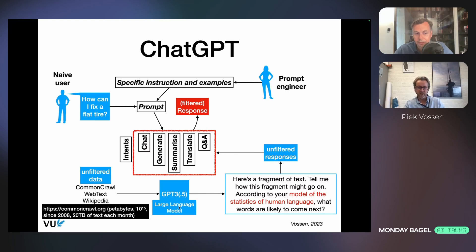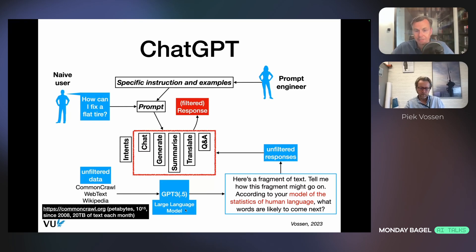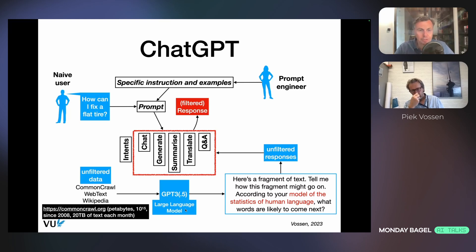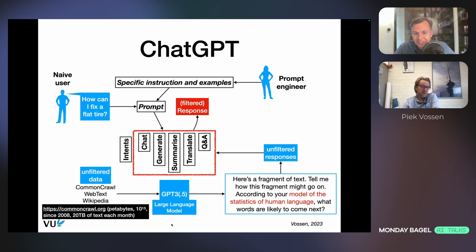One more question: you said this is unfiltered data. We've probably heard about IP and scraping data and IP infringement. Some people say these models use copyrighted works, and some say it's just using data not associated to specific works and authors. Can we say that these models actually infringe intellectual property, or are they just scraping data?